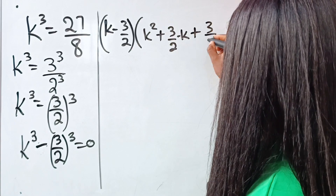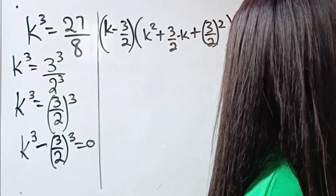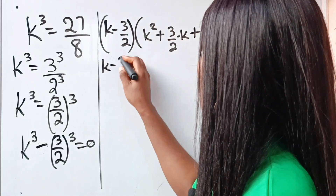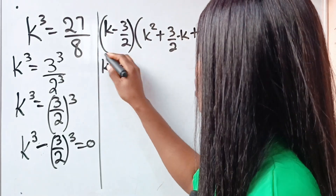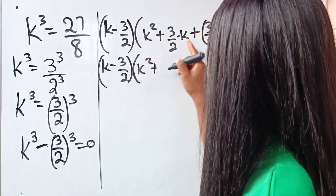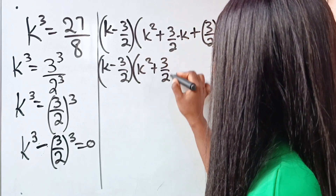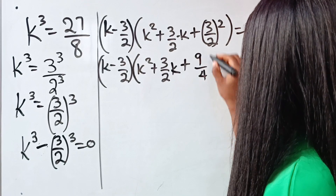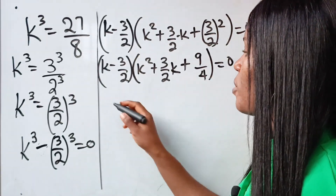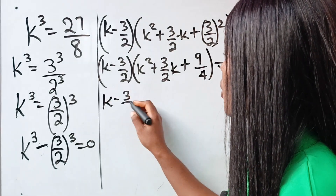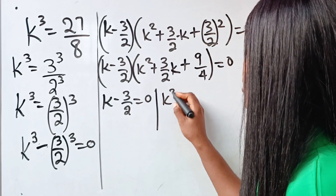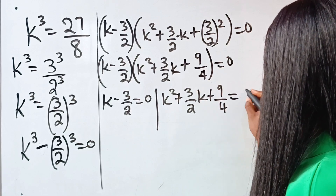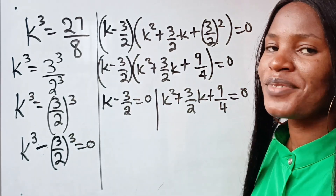And everything is equal to 0. So we have k minus 3 over 2, multiplied by k squared plus (3/2)k plus 9 over 4, is equal to 0. This means that k minus 3 over 2 equals 0, and that k squared plus (3/2)k plus 9 over 4 is also equal to 0.